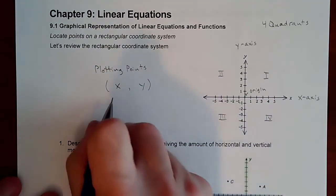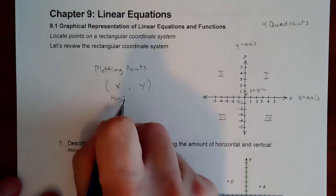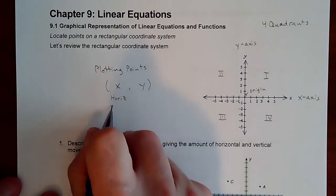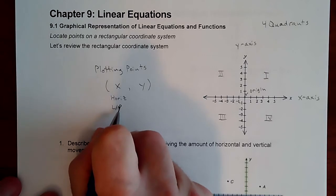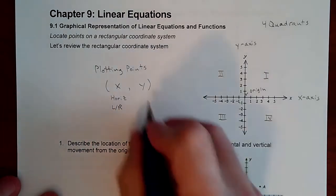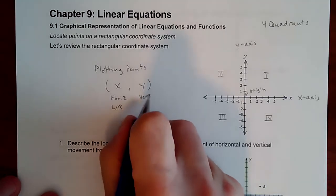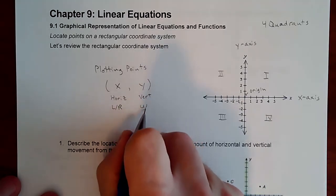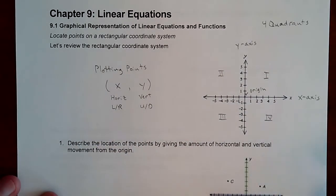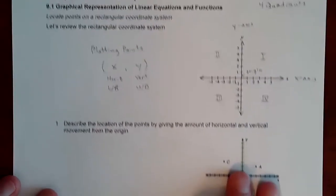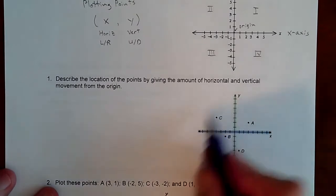Each point that you have consists of an x value and a y value. The x value is your horizontal value, your left and right movement from the origin, and then the y value represents your vertical movement, your up or down movement from the origin.